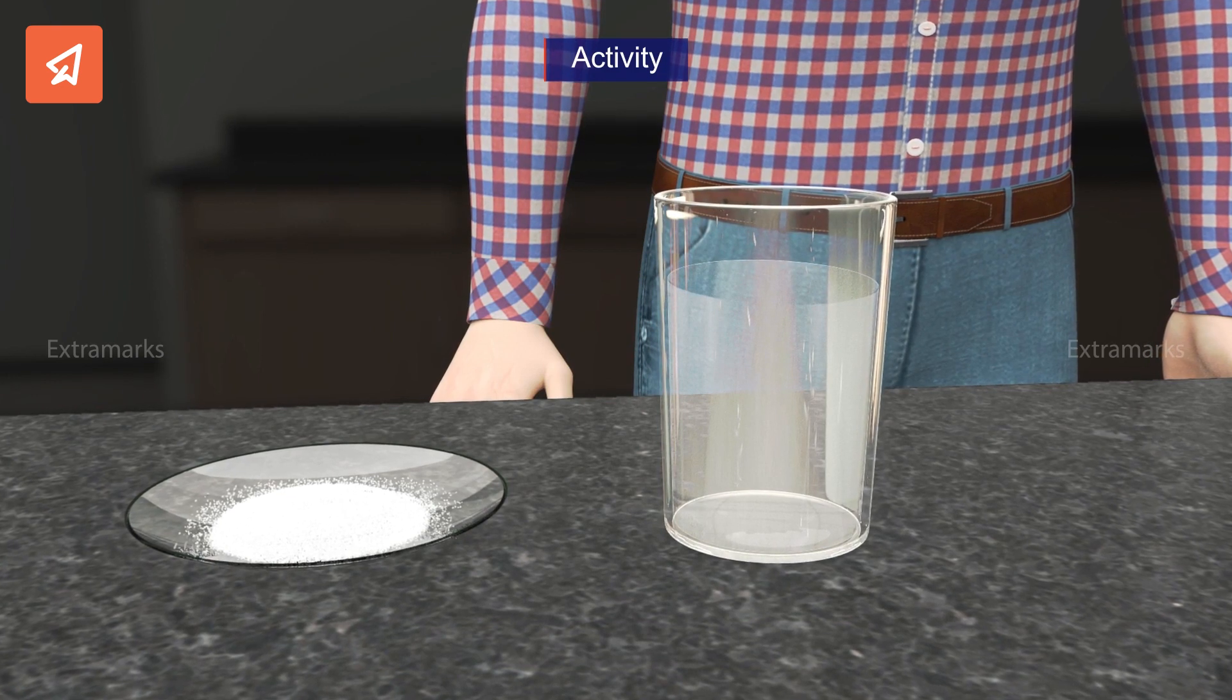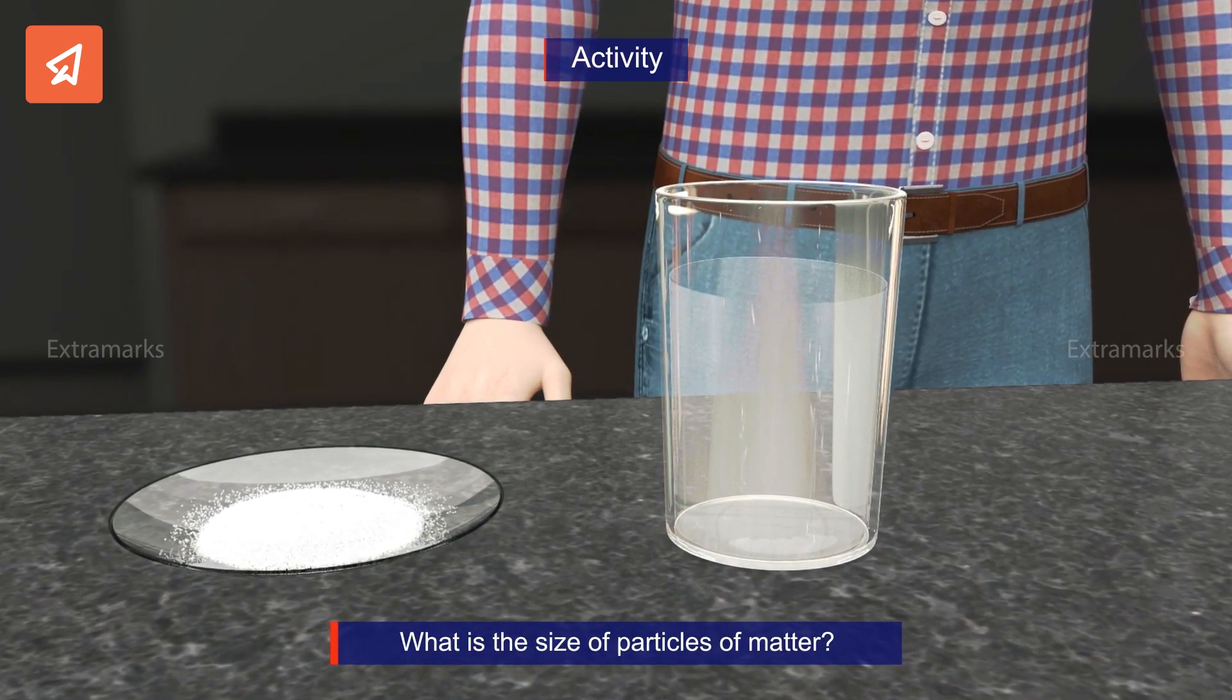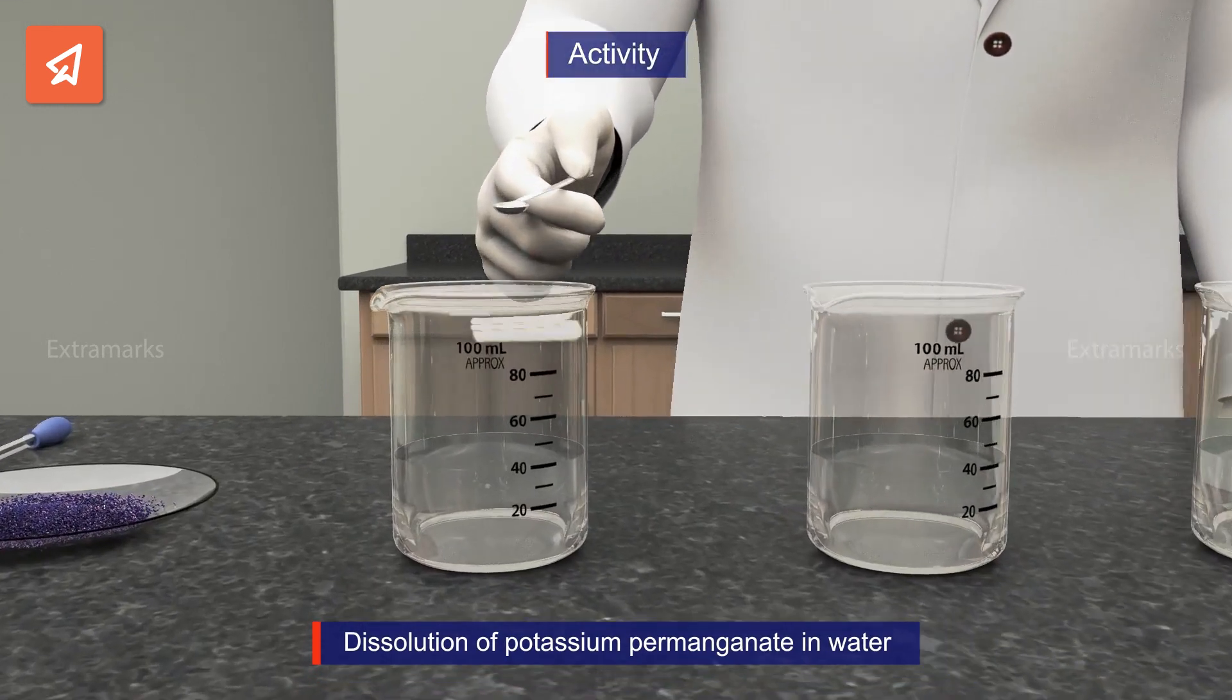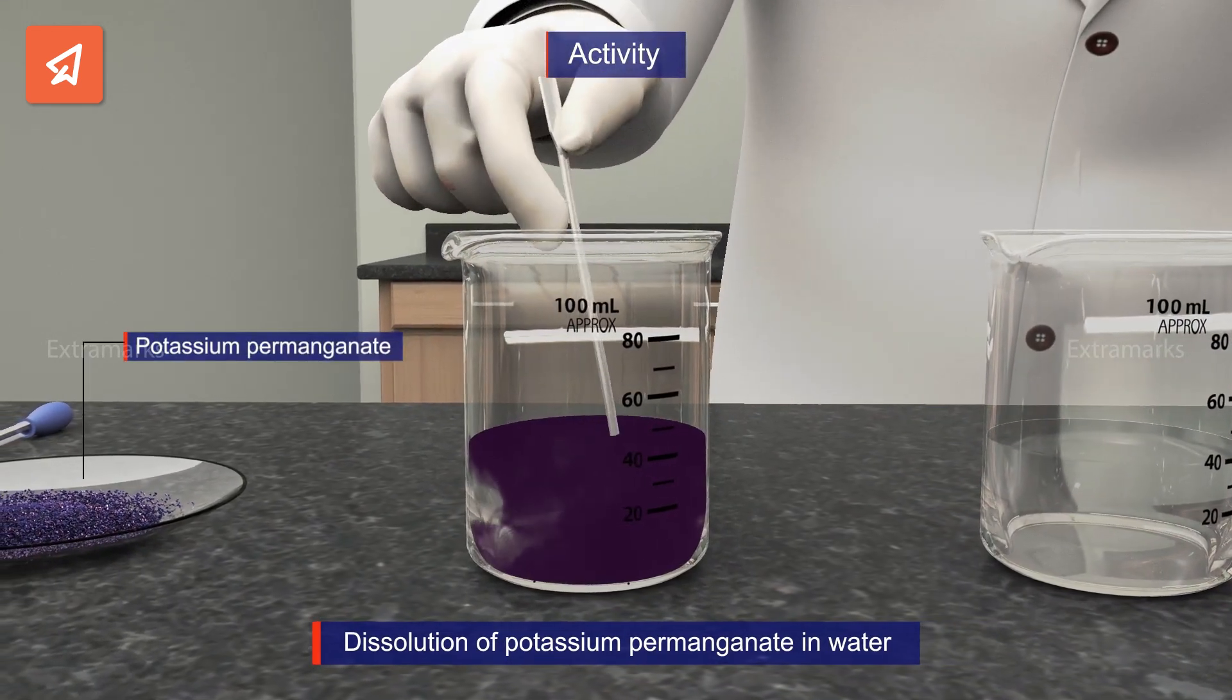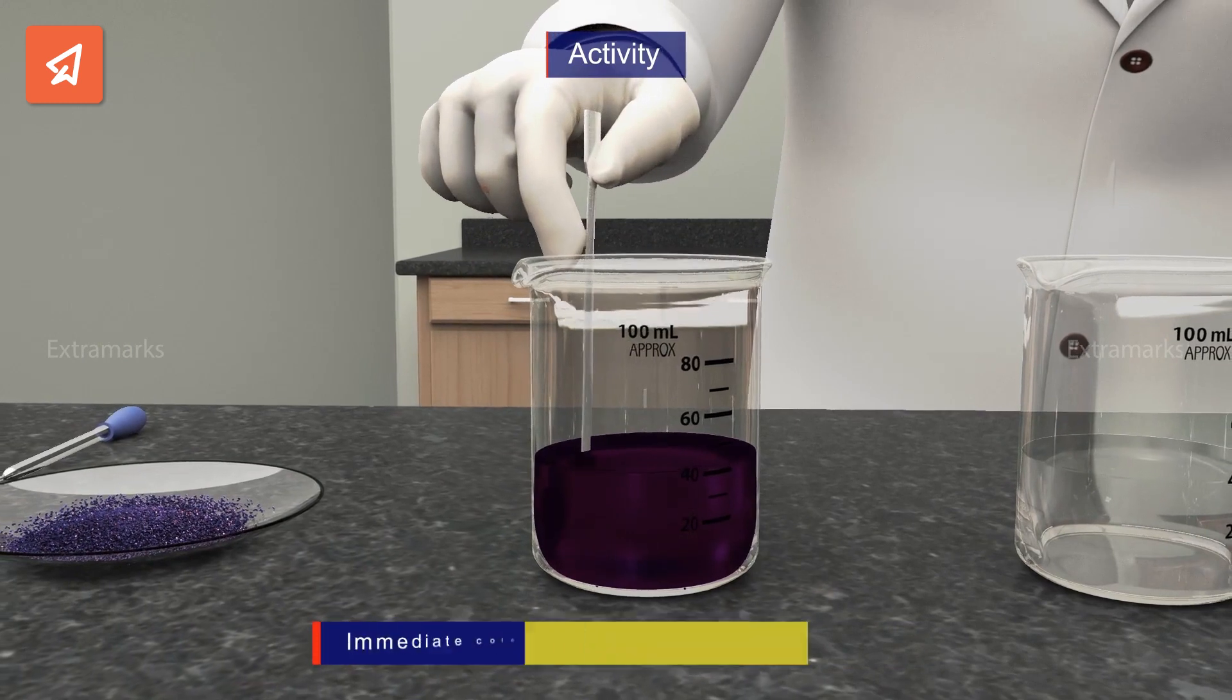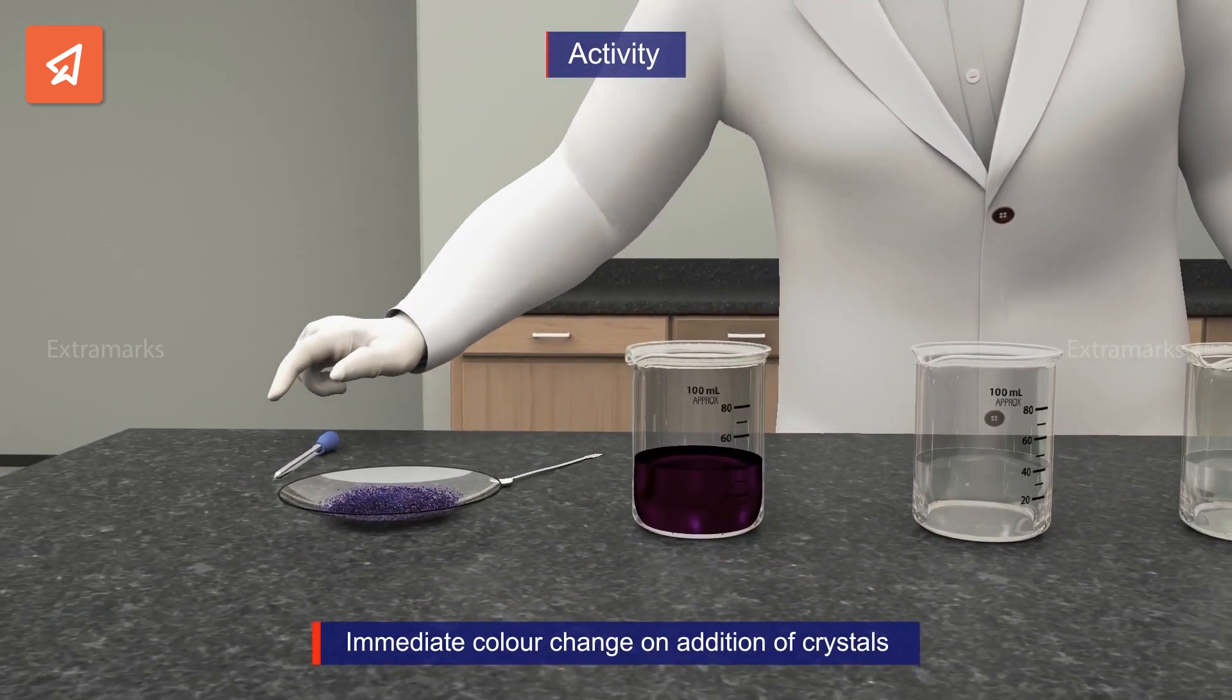Let us further increase our understanding about the size of the particles of matter by studying classical example of dissolution of potassium permanganate in water. We take beakers having water and add few crystals of potassium permanganate to the first beaker on the left. It can be seen that even a small amount of potassium permanganate crystals can gradually turn the whole beaker purple, which occurs due to the dissolution of crystals in water.